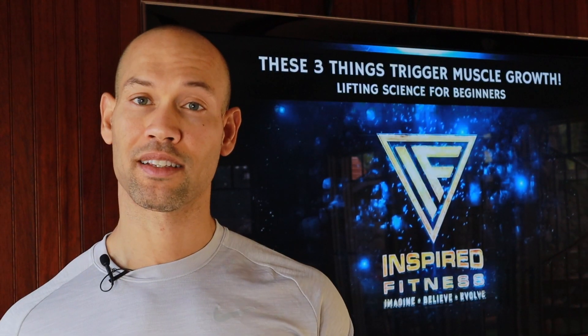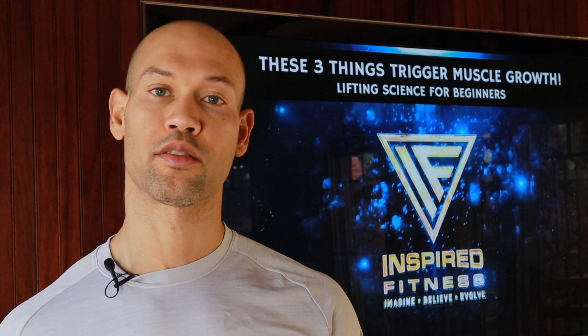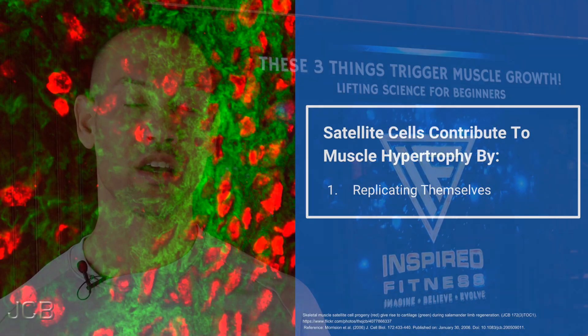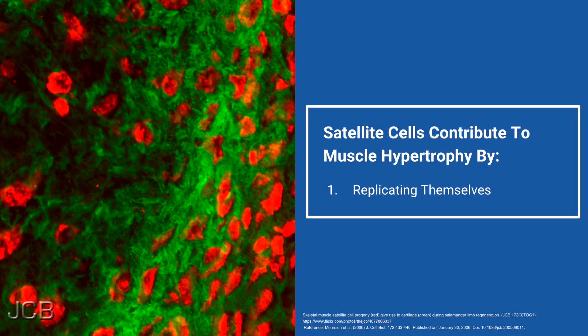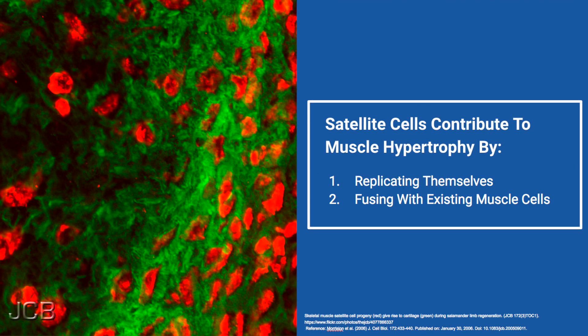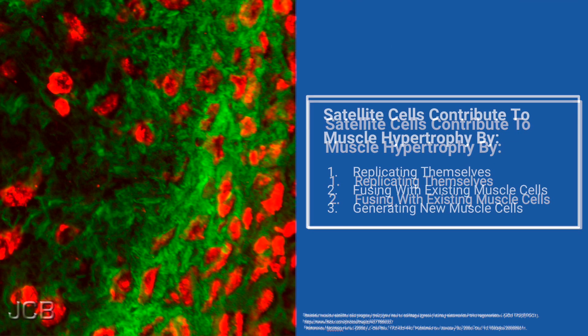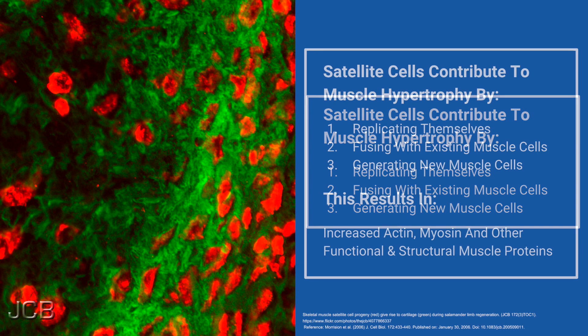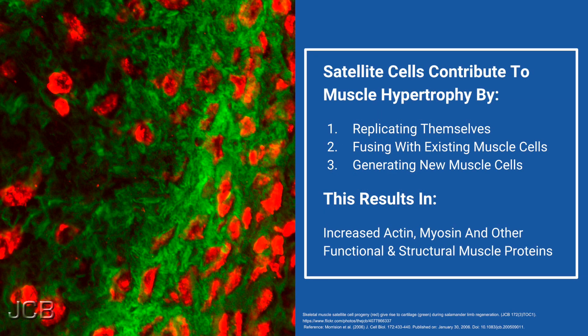These satellite cells are thought to contribute to muscle hypertrophy by: number one, creating copies of themselves which then fuse with existing muscle cells or generate new muscle cells — which allows for an increase in the number of actin and myosin filaments — as well as other proteins important to muscle structure and muscle function.